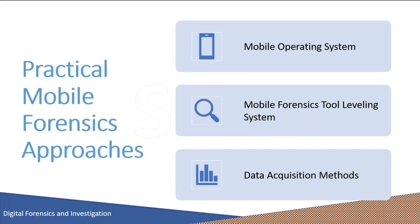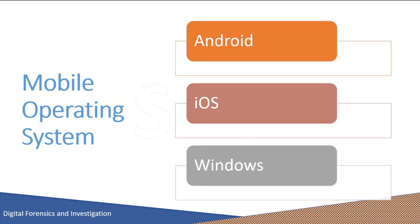Similar to any forensic investigation, there are several approaches for acquisition and examination of data from a mobile phone. The type of mobile device, operating system, and security settings generally dictate the procedure to be followed. One of the major factors in data acquisition is the mobile operating system. From low-end mobile phones to smartphones, mobile operating systems have come a long way. The mobile operating system directly affects how the examiner can access the device — for example, Android gives terminal-level access whereas iOS does not. A comprehensive understanding of the mobile platform helps the forensic examiner make sound decisions and conduct a conclusive investigation.